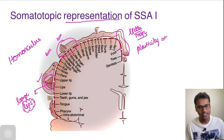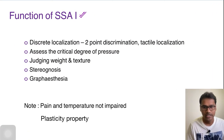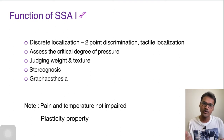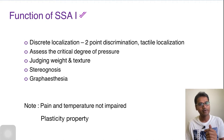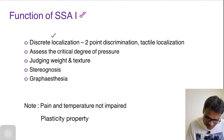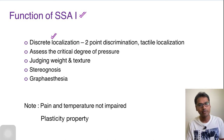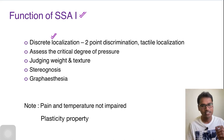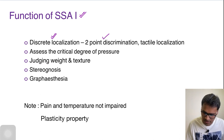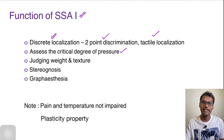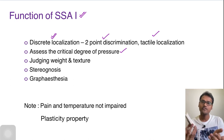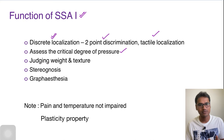Now let's discuss the function of each area. Coming to somatosensory area 1: in our dorsal column discussion I mentioned some sensations as cortical sensations — sensations that need an intact cortex to understand and interpret. These are called cortical sensations and they are perceived by the somatosensory cortex only. Those sensations include discrete localization; for example, touch can be felt and even sensed at the thalamus, but for discrete localization we need an intact cortex — like two-point discrimination and tactile localization. It also helps assess the critical degree of pressure, and whenever an object is given to your hand you can judge its weight — heavier for iron, lighter for plastic.